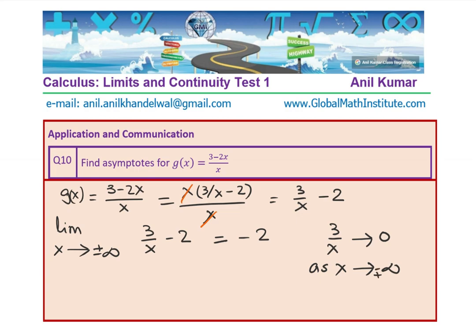Since 3 over x approaches 0 as x approaches infinitely large value, it could be positive or negative. We get the idea. That is how we show that the horizontal asymptote is indeed equal to y equals to minus 2. Does that make sense?